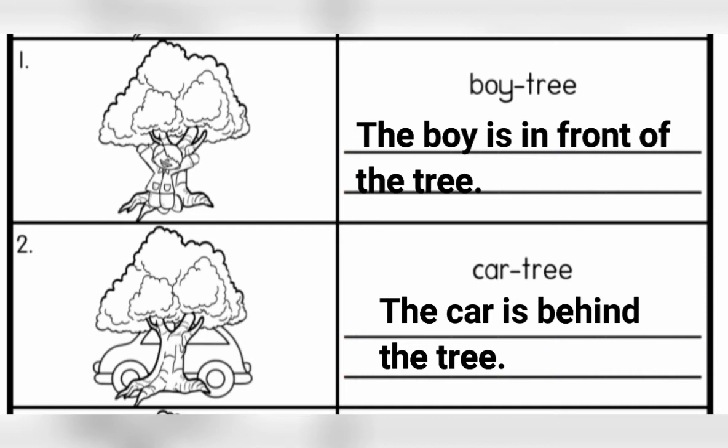For number one, if somebody asks you 'where is the boy?', you can answer 'the boy is in front of the tree.' For number two, if somebody asks 'where is the car?', you can answer 'the car is behind the tree.'